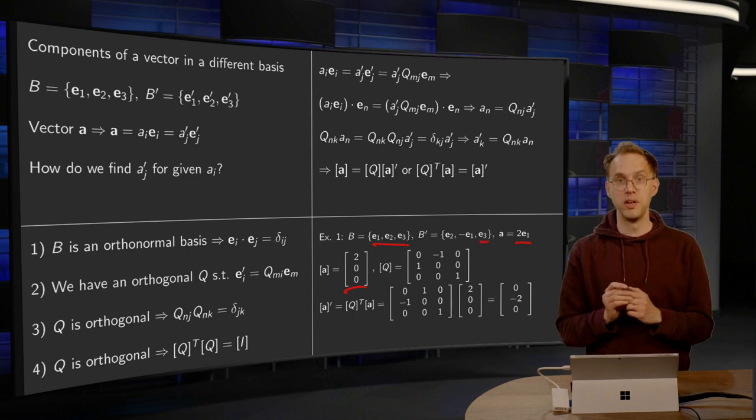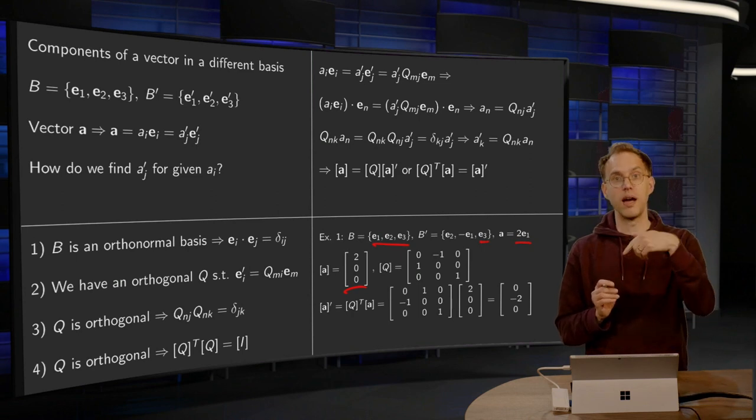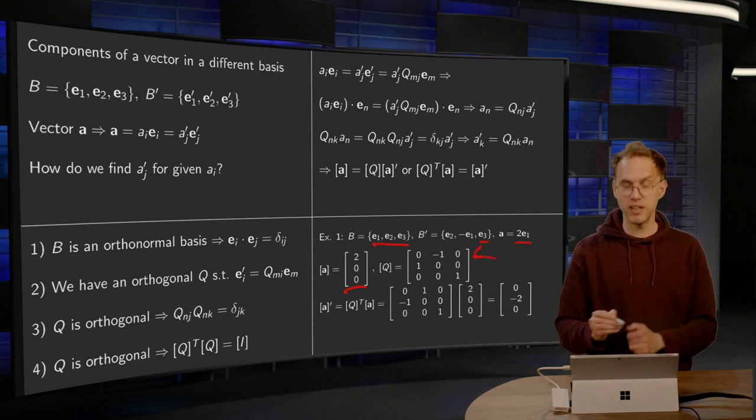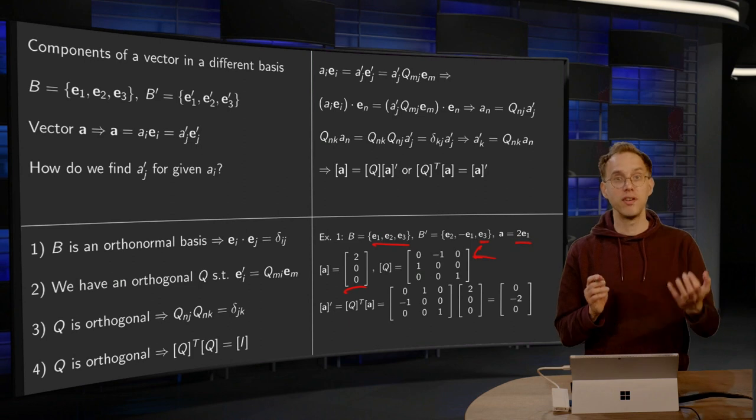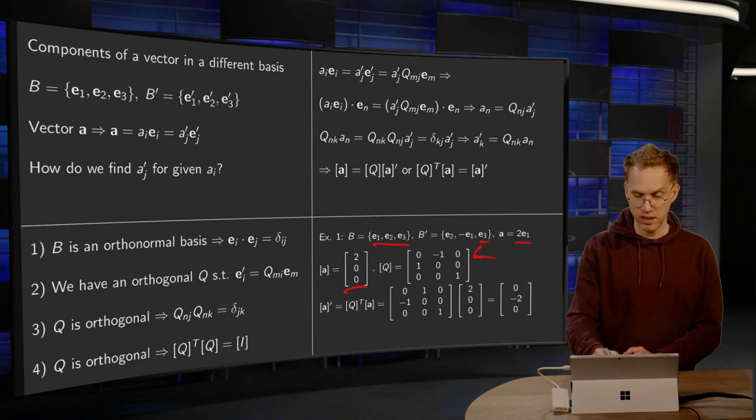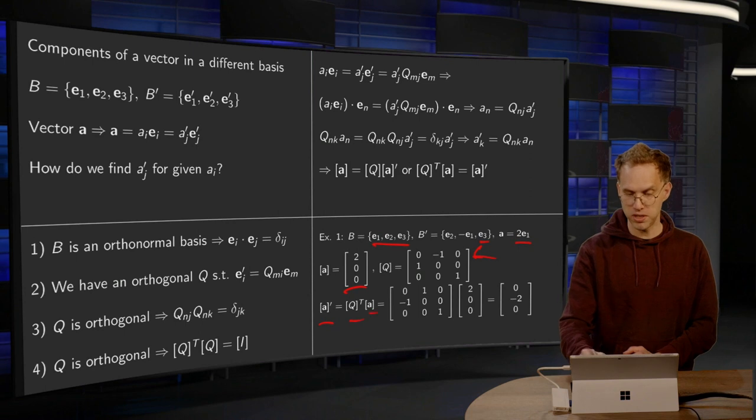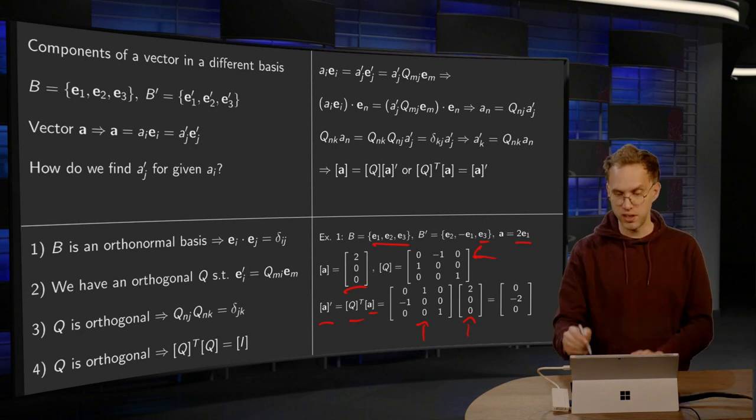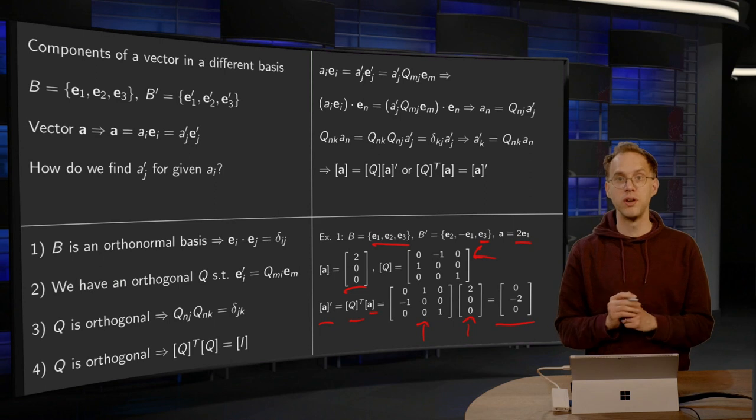The matrix of Q is the E1' in the old basis, so zero, one, zero, similarly for the other columns, so there we have the matrix of Q. And then we can find our new coordinate vector A' which is Q transpose times A. So, here we have our Q transpose, here we have the vector in the old coordinates. You can compute matrix and vector and you get zero, minus two, zero.